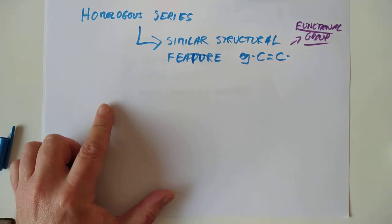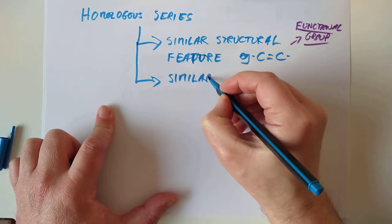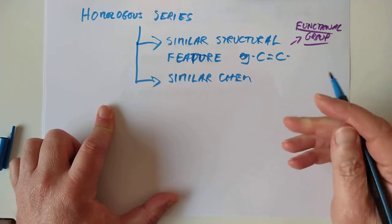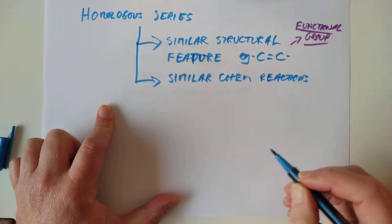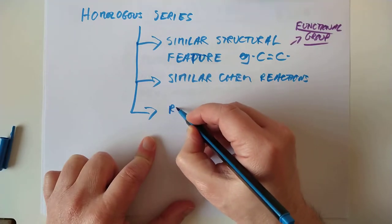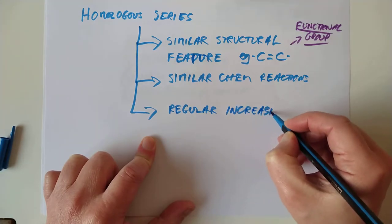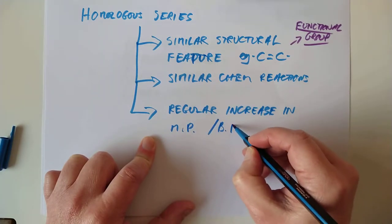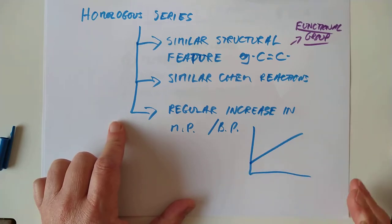What other things do members of a homologous series have in common? They also have similar chemical reactions. For the alkenes, for example, they all decolourise bromine water instantly — that word 'instantly' is very important. They also have a linear or regular increase in melting and boiling points. If you graph them, it's close enough to a straight line.